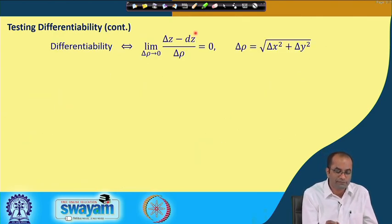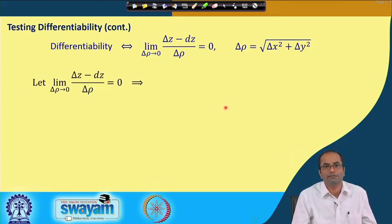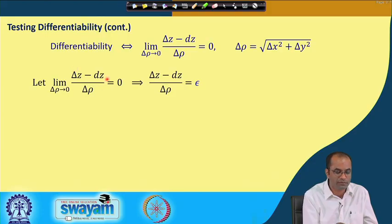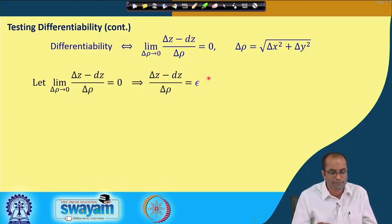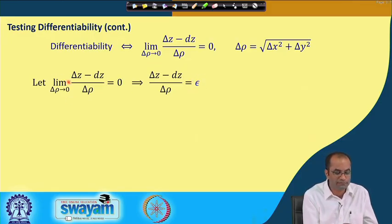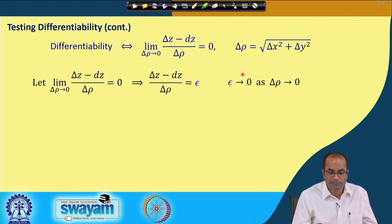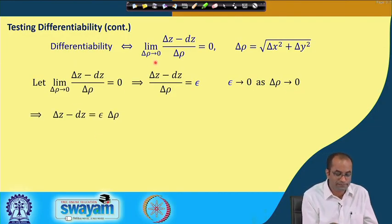Now we go the other way: if this limit equals 0, we show the function is differentiable. If the limit of (δz − dz)/δρ = 0, we can introduce an ε such that (δz − dz)/δρ = ε, where ε has the property that ε → 0 as δρ → 0, precisely because the limit is 0. Rearranging, δz − dz = ε · δρ = ε · √(δx² + δy²).